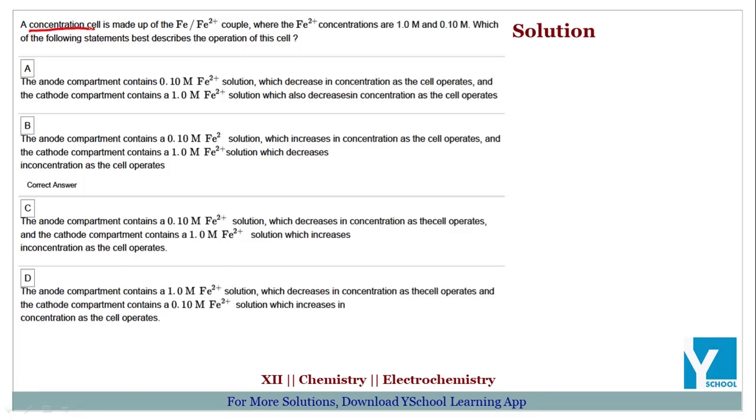The question is: a concentration cell is made up of the iron/iron²⁺ couple where iron²⁺ concentrations are 1 molar and 0.1 molar. Which of the following statements best describes the operation of this cell?